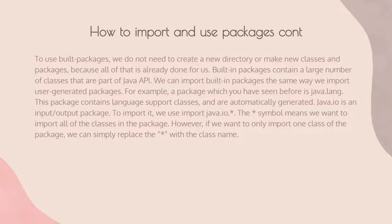To use built-in packages, we do not need to create a new directory or make new classes, because all of that is already done for us. Built-in packages contain a large number of classes that are part of the Java API. For example, 'java.lang' contains language support classes and is automatically imported. 'java.io' is an input/output package — to import it we use 'import java.io.*', where the asterisk means we want to import all classes in the package.